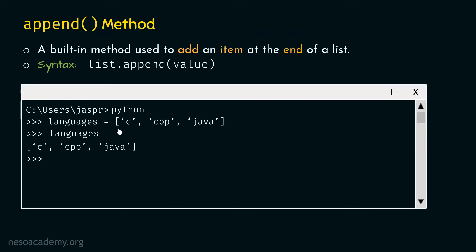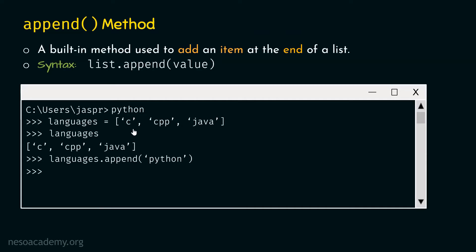The requirement is to add one more language, Python, at the end of this list. We can use the append method for this. We type: languages.append('Python'). With this, we add Python to the list. Let's hit enter, then type 'languages' and hit enter again. We get C, Cpp, Java, and Python — a total of four items.